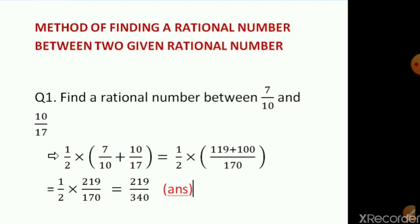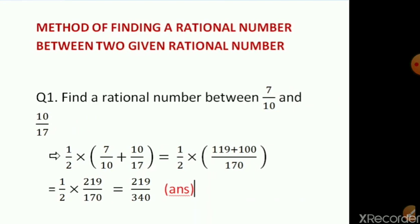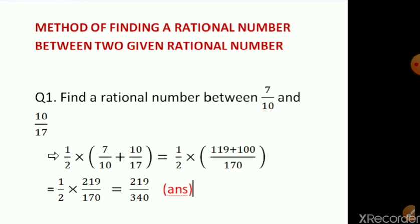In the first question, we have to find a rational number in between 7 by 10 and 10 by 17. In the first method, what we do is we add the given rational numbers and then divide it by 2. So what we have done here is we have written 1 by 2 into 7 by 10 plus 10 by 17.